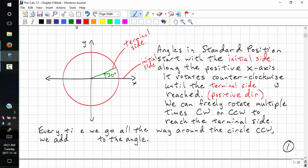This is the positive direction. If we were going clockwise, that would be the negative direction. We can freely rotate multiple times clockwise or counterclockwise to reach the terminal side.